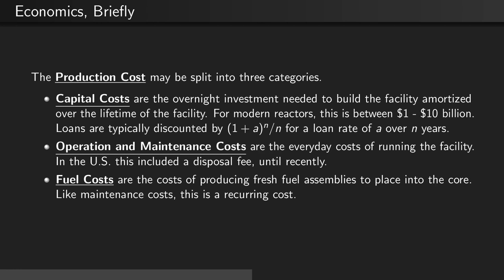Operation and maintenance costs are the everyday costs of running the facility. In the United States, this included a disposal fee until recently. Fuel costs are the costs of producing fresh fuel assemblies to place into the core. Like maintenance costs, this is a recurring cost.